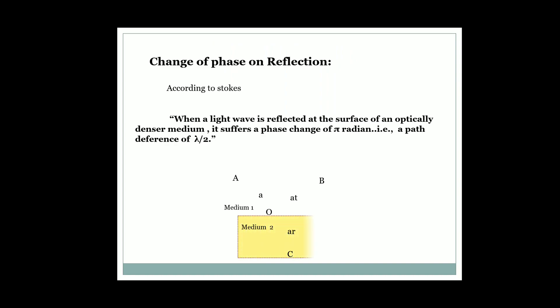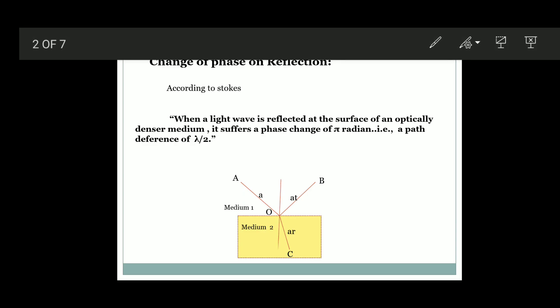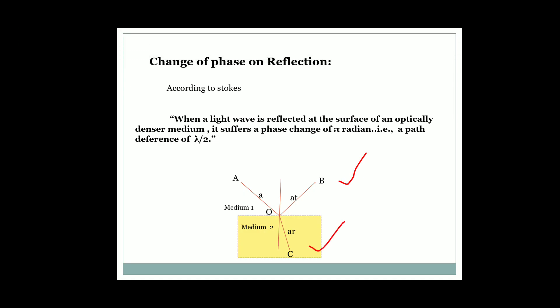Here, medium 2 is the denser medium than medium 1. AO is a ray which is incident on the denser medium, partially reflected along OB, and partially transmitted along OC. This is the normal drawn in the diagram. OB is the reflected ray and OC is the transmitted ray.